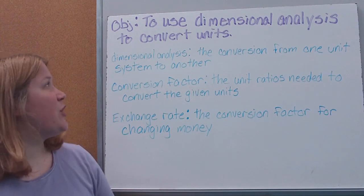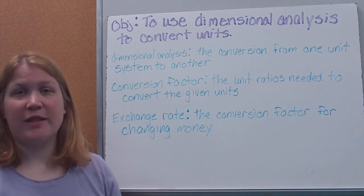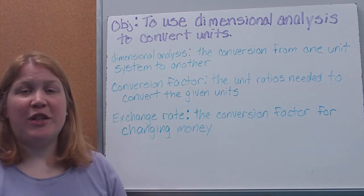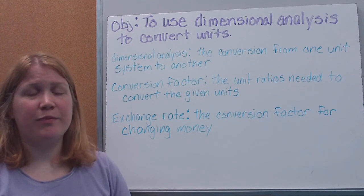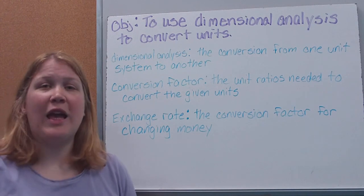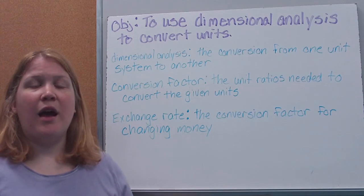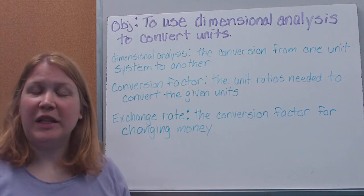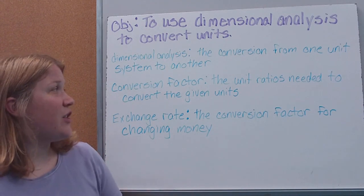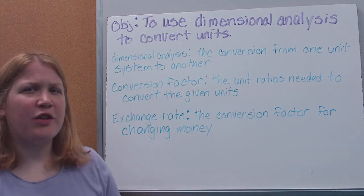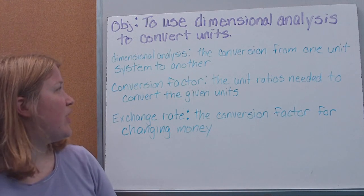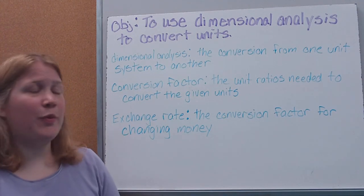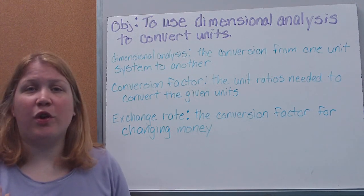Dimensional analysis is the conversion from one unit system to another. This is particularly effective if you're going metric to English, that kind of thing. Dimensional analysis is something that you will need for the future — when you go into chemistry and some of the sciences, you'll be using this a lot more. So this is a good background for that. A conversion factor is just the unit ratio that we need to convert one unit to another.